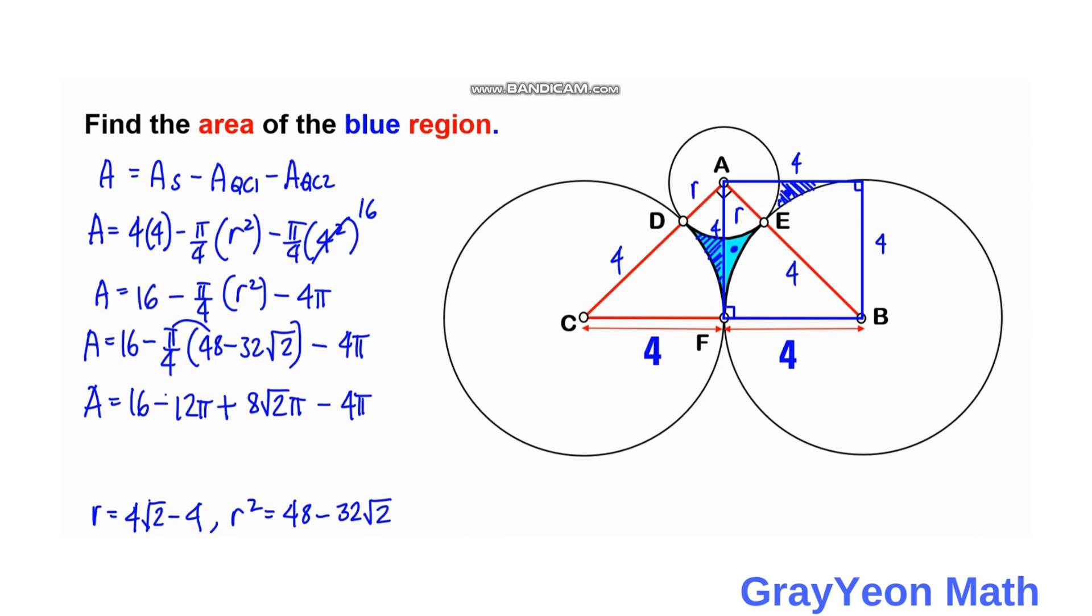Simplifying this, we have 16π. Combining these two, we have negative 16π, and we retain this 16, and we write this 8√2π. So the area is 16 + 8√2π - 16π square units. And that is our answer.